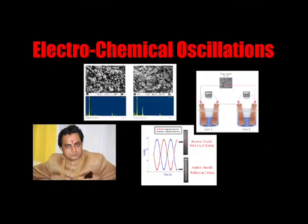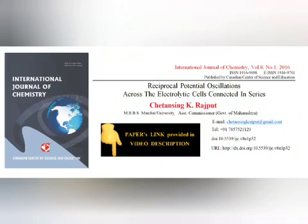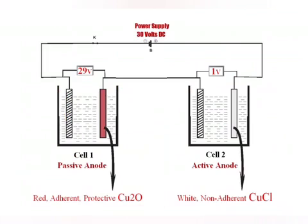Electrochemical oscillations have always been the area of research interest for several investigators in physical chemistry. This video reveals the electrochemical potential oscillations across the series arrangement of identical electrolytic cells having copper anodes and chloride electrolyte. This phenomenon of potential oscillations between such coupled cells has been described in a research paper. Such series arrangement of electrolytic cells has finally enabled to resolve the phenomenon of electrochemical oscillations.